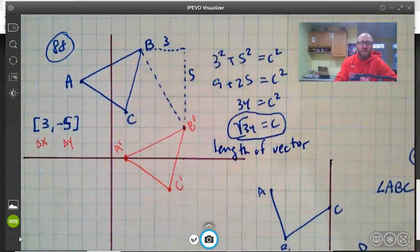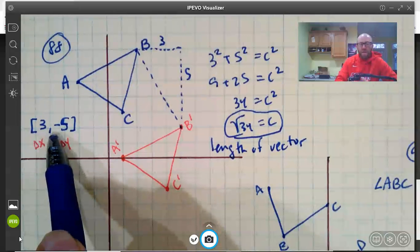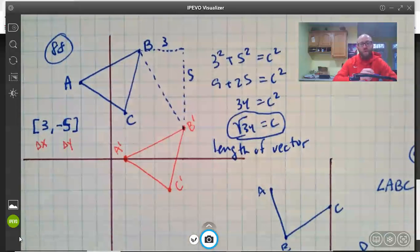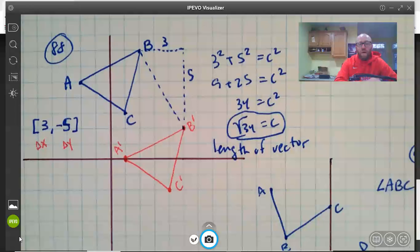But notice you didn't actually have to draw the diagram to get that, because that's coming straight from the vector itself. We're moving three spaces to the right and five spaces down. Well three and five are going to be our a and b, and a squared plus b squared equals c squared. And that is moving a triangle based on a vector translation.